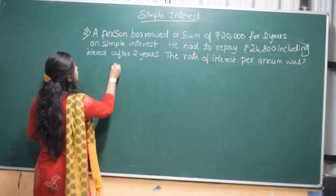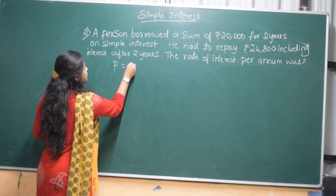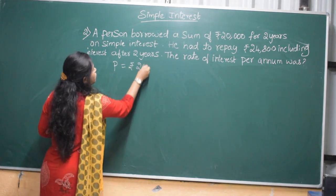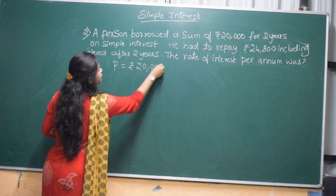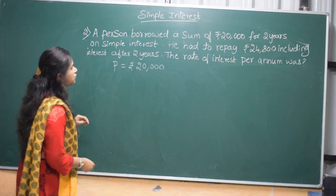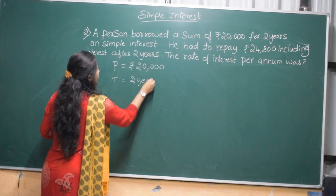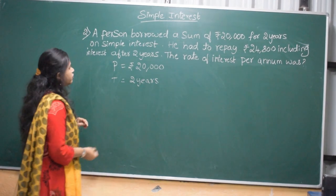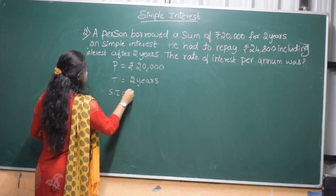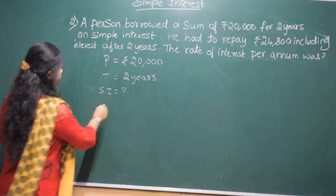Before that, the principal is given. What is the principal amount? It is Rs. 20,000 and time is given. Time is 2 years. We want to find the simple interest here and rate.